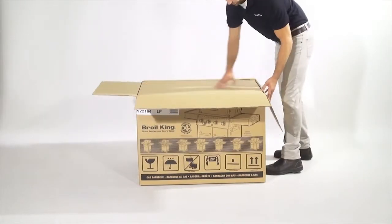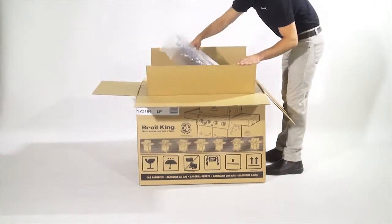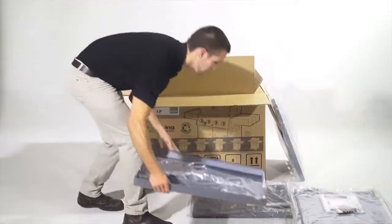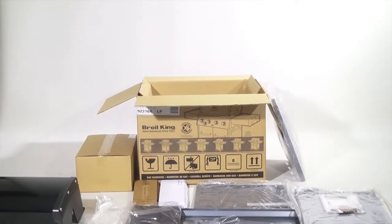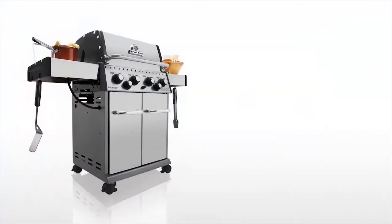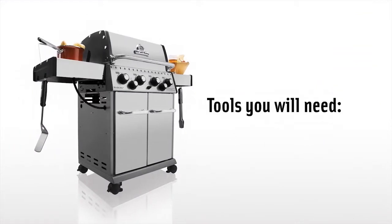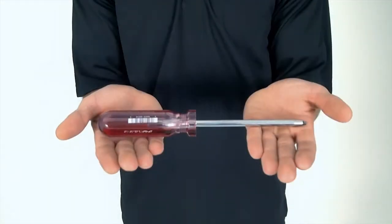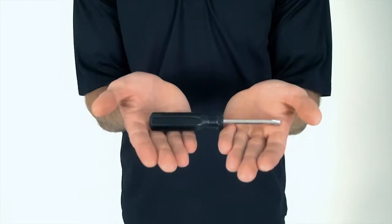Before starting, unpack all components of your barbecue and lay them out in your workspace. Use the drip pan to hold the contents of the hardware bag. You will need the following tools to assemble your Broilking barbecue: a number two Robertson or Phillips screwdriver.